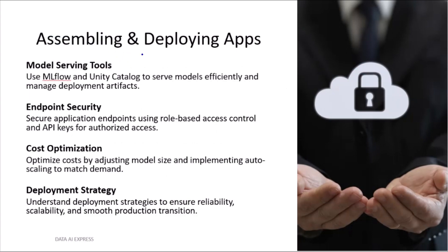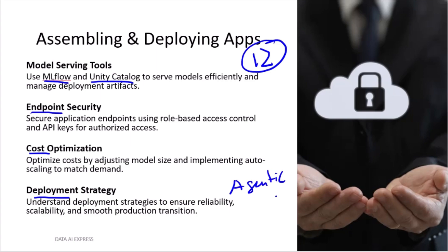You've built your app, but building is not enough — you have to deploy and govern it. This is Assembling and Deploying Applications, with 12 questions. You must know two tools inside out: MLflow and Unity Catalog. There will be many questions on how you use them to control deployment, manage cost, ensure endpoint security, and define deployment strategies for production. This section also goes beyond simple GenAI — it asks about agentic AI. How do you assemble multiple models into one application? What agents can run in parallel? How do you connect the output of one agent to the input of another? You will get practical questions on the agentic framework like ReAct, which stands for Reason and Act, as well as concepts like Observe and Act.